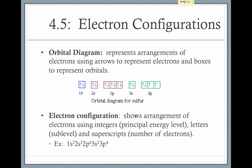In the electron configuration, the big numbers represent the principal energy level — so 1, 2, 3 correspond to n=1, n=2, n=3. The letters represent the sublevel or the shapes of the orbitals, such as the 1s sublevel. The superscripts represent the number of electrons in that sublevel, so this tells us there are two electrons in the 1s sublevel and four electrons in the 3p sublevel.